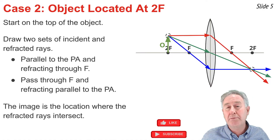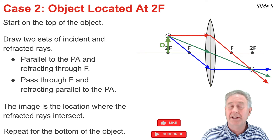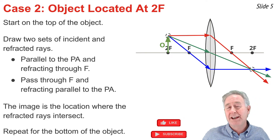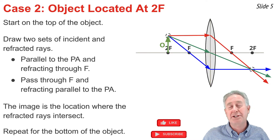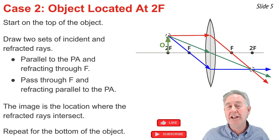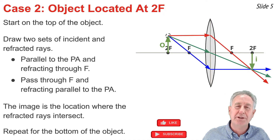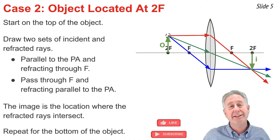To determine the complete image, I pick a point at the bottom of the object and find the image of the bottom. Since the object is on the principal axis, the image of the bottom is also on the principal axis. So the complete image can be drawn from the principal axis straight down to the intersection point representing the image of the top of the object, drawn on the diagram and labeled I.